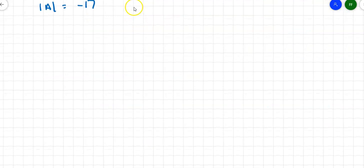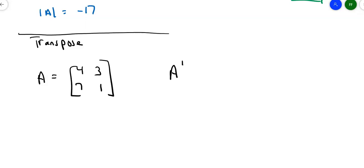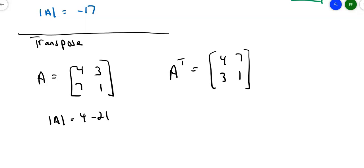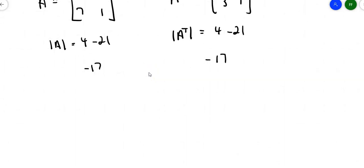Let's talk about transposes. A transpose interchanges rows and columns. Suppose matrix A is [4, 3; 7, 1], making A transpose equal to [4, 7; 3, 1]. The determinant of A is 4 minus 21, which is negative 17. The determinant of A transpose is 4 times 1 minus 7 times 3, the same thing — because switching rows and columns doesn't change the diagonal values. So the determinant of A equals the determinant of A transpose.